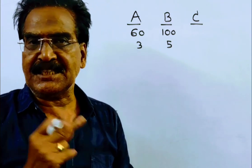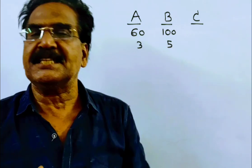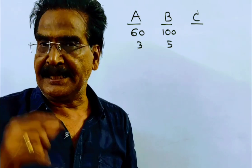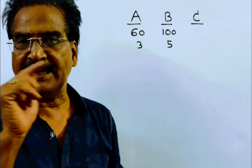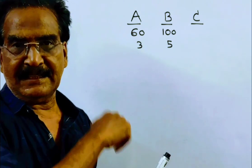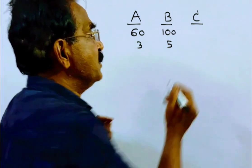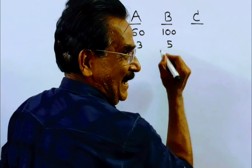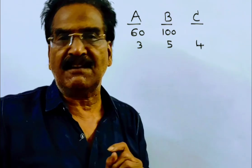Friends, the next statement is B takes 20% less time than C. That implies C is 20% less efficient than B. So 20% of 5 is 1. So C can do 1 unit less than B. That means C can do 4 units of work per day.